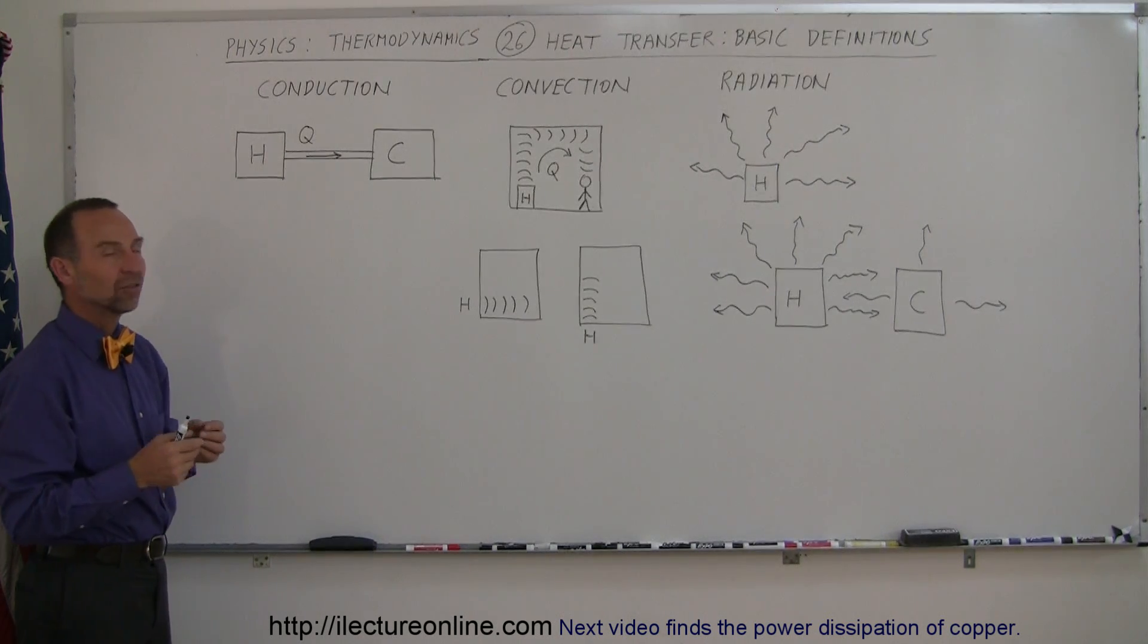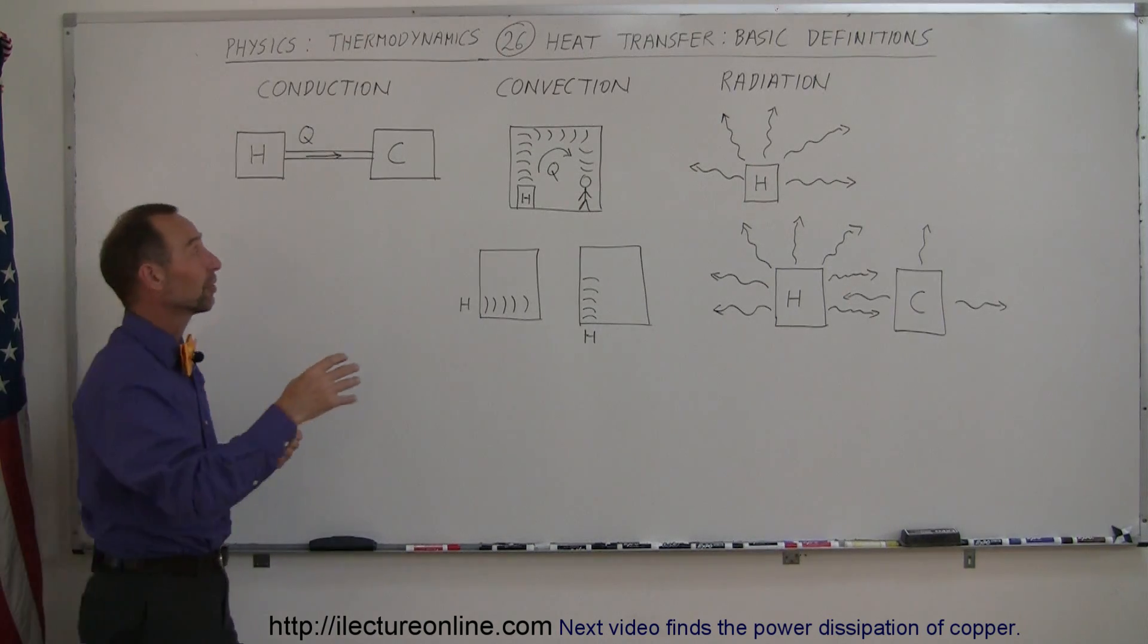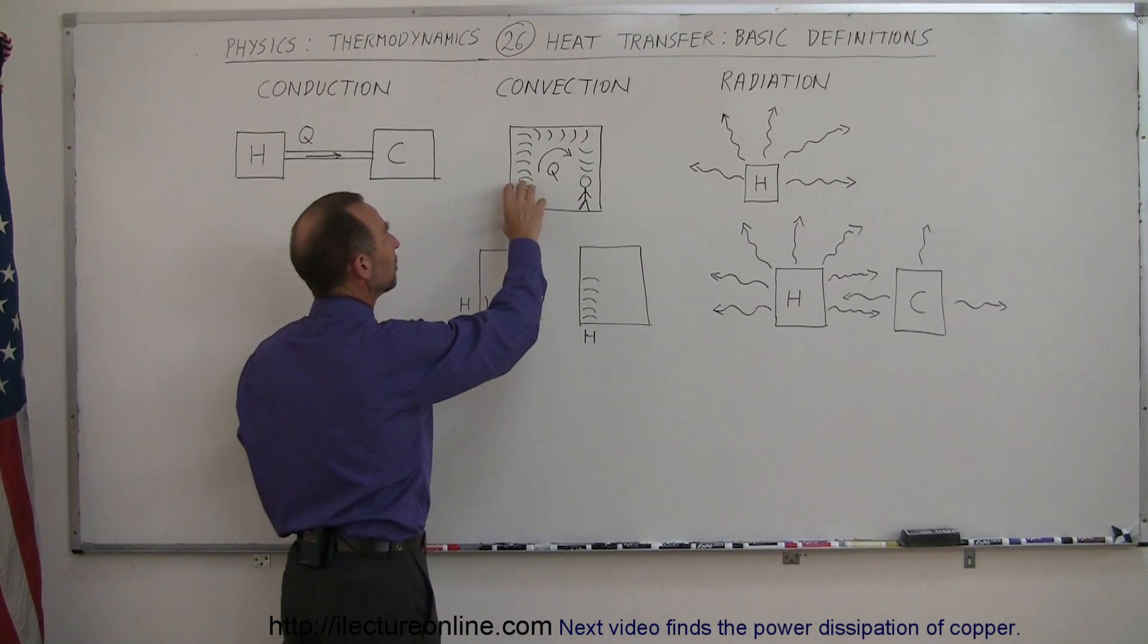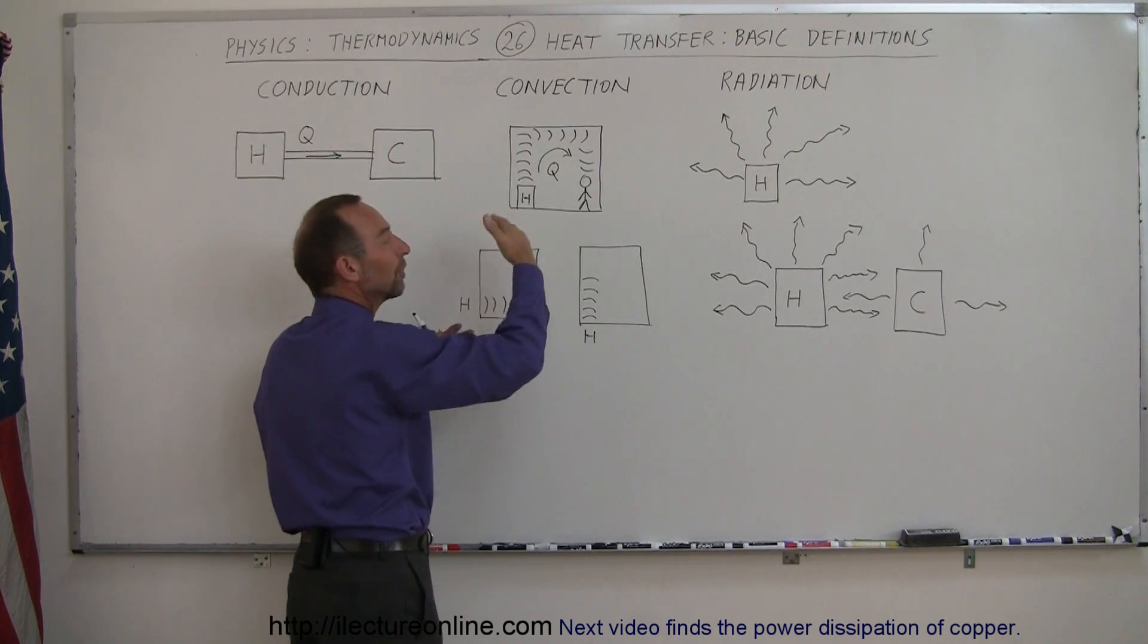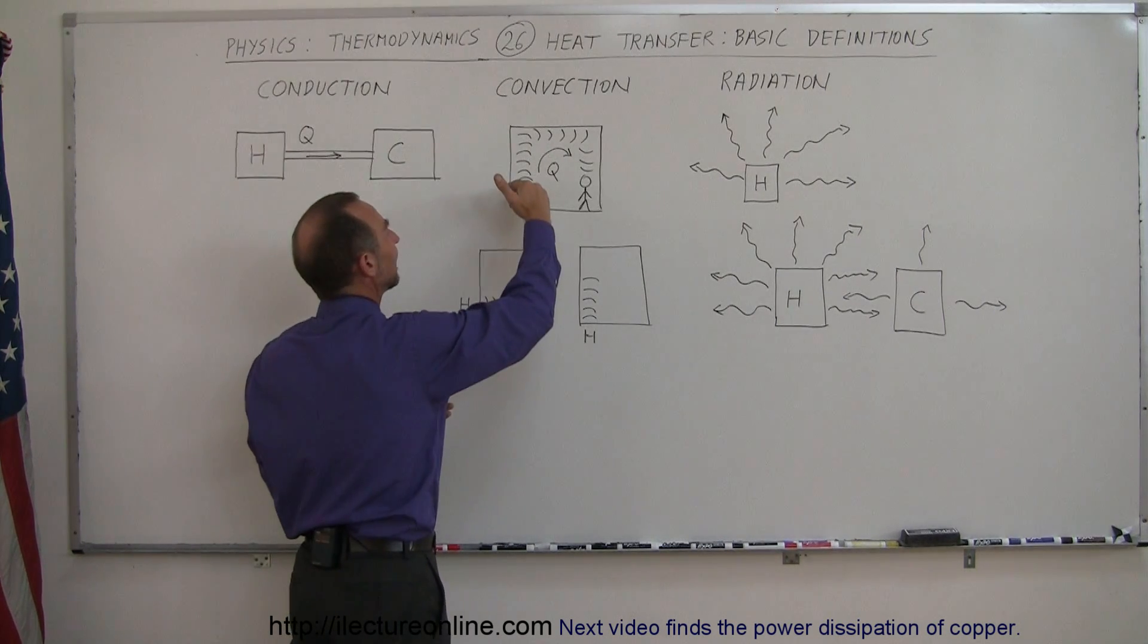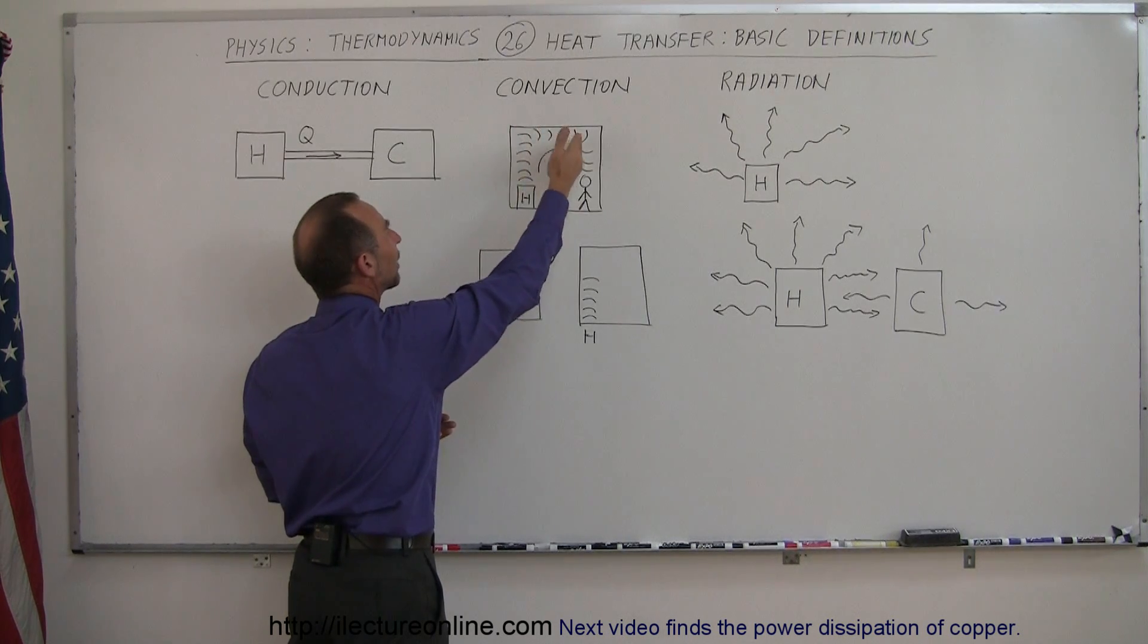Convection is a means by which heat is transferred through the movement of a medium. For example, we have a hot object in a room. It heats the air up around it. The air will then move, expand, and tends to move, and the heat will then travel along with the hot air.